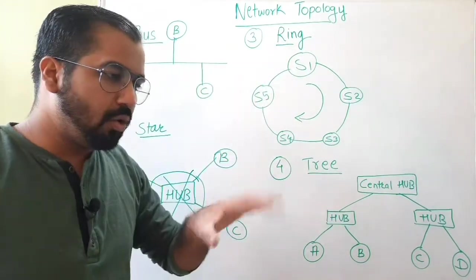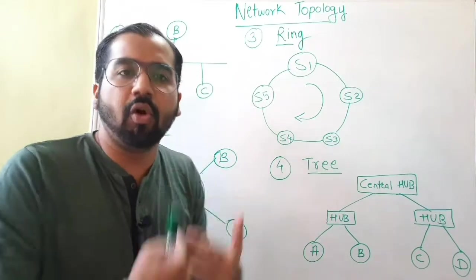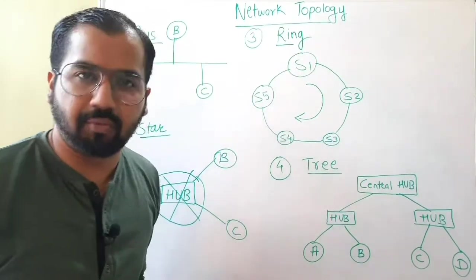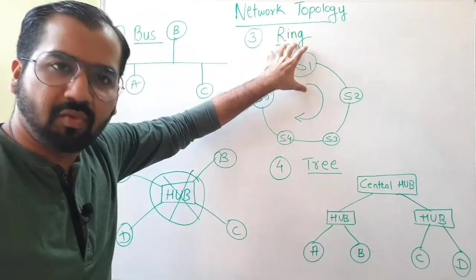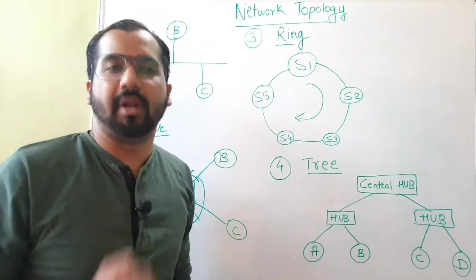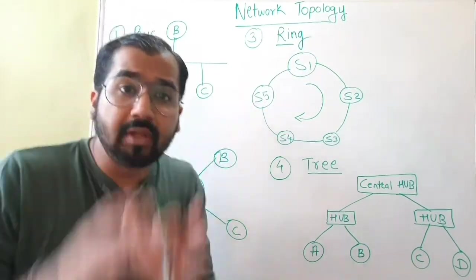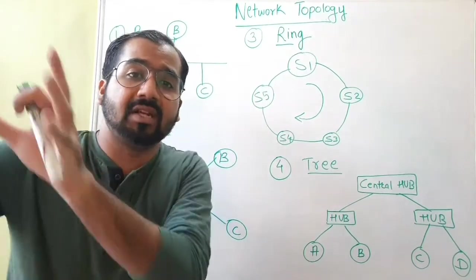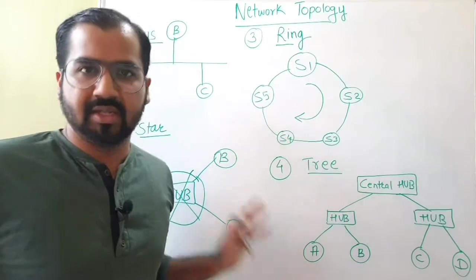Any station who wants to transmit the data, who wants to transmit some message, will have to hold the token, will have to take the token. Without token, any station cannot transmit any message to any other station in a ring topology. Simple as that.